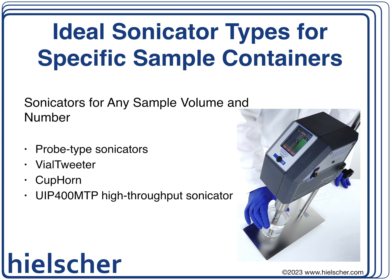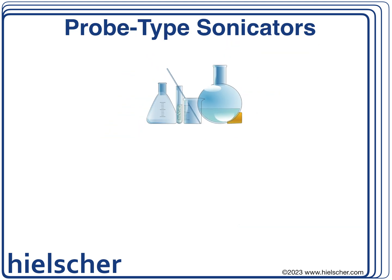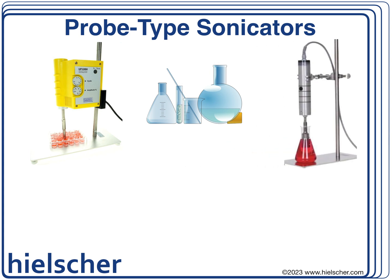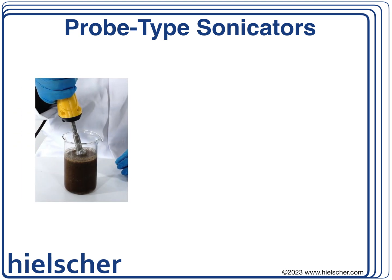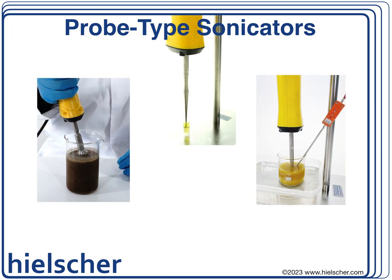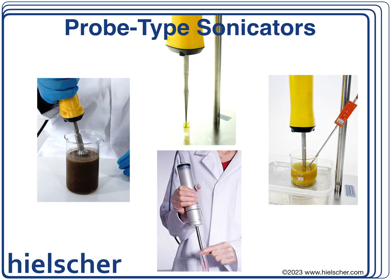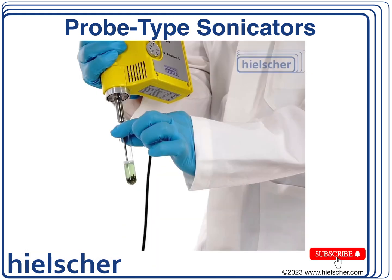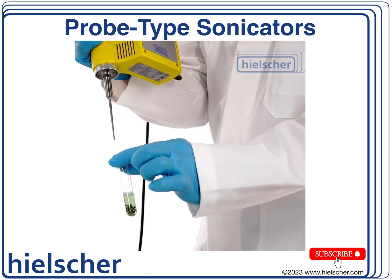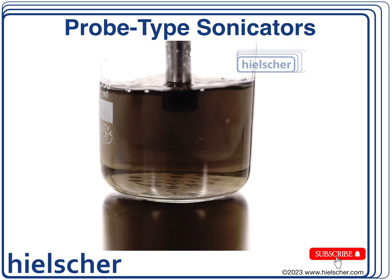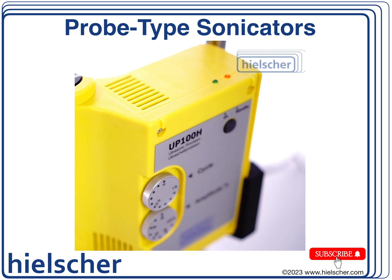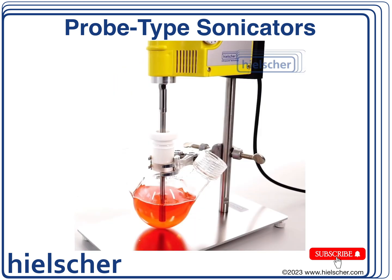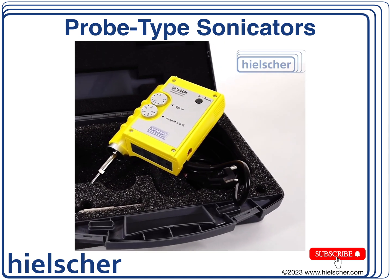Now let's explore suitable sonicator models for each container type. The probe-type sonicator is a popular tissue homogenizer found in many biological and biochemical labs, used for cell disruption, protein extraction, cell solubilization, DNA/RNA fragmentation, and buffer solution homogenization. Probe-type ultrasonicators excel for large sample volumes and smaller quantities — the tip or sonotrode is inserted directly into the sample, exposing the liquid to ultrasound waves. With different sonotrode sizes and shapes, they are adaptable for beakers, flasks, vials, and tubes.